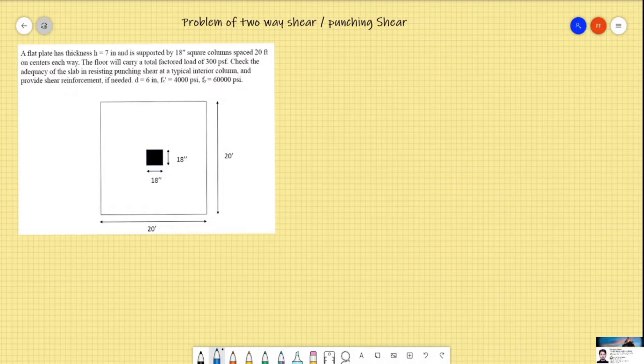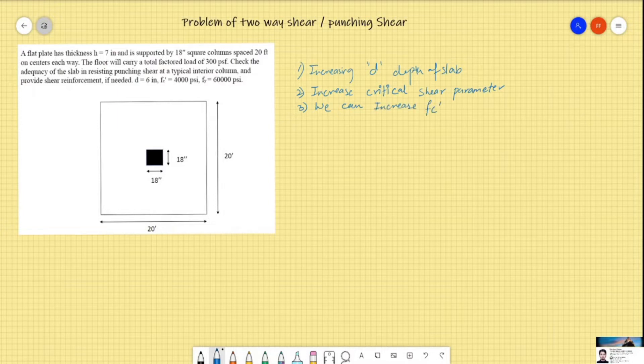We will briefly go through each technique one by one, then solve this problem using these techniques. Number one is increasing the depth of slab. Number two is increasing the critical shear parameter. Number three is we can increase the strength of concrete or fc prime. And number four is providing extra shear reinforcement within the slab.